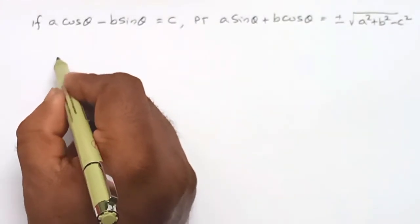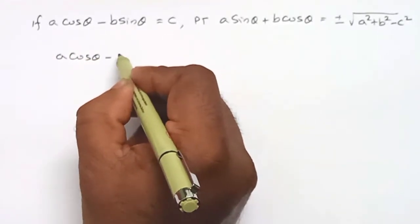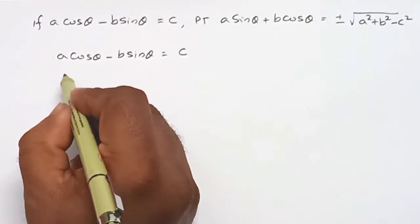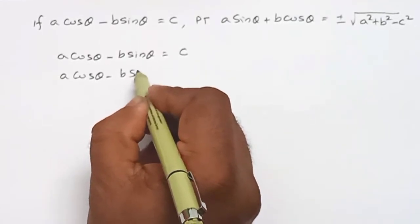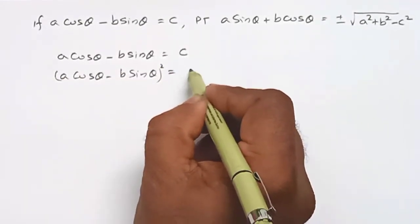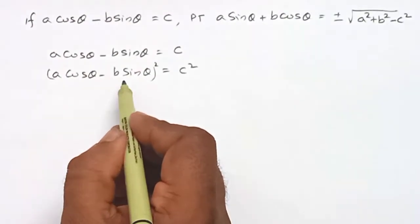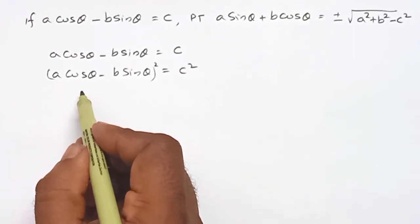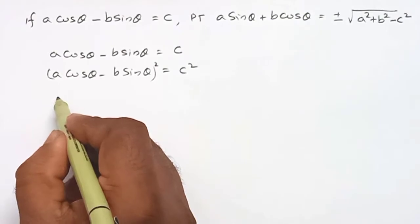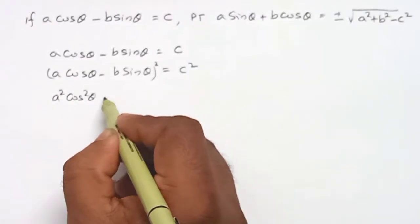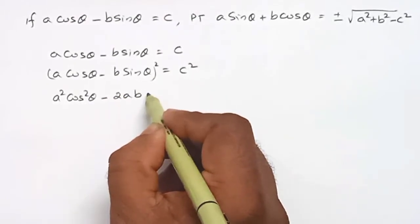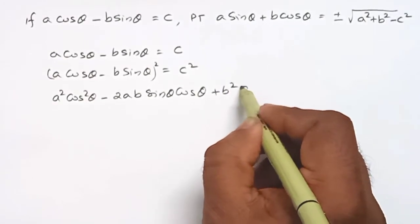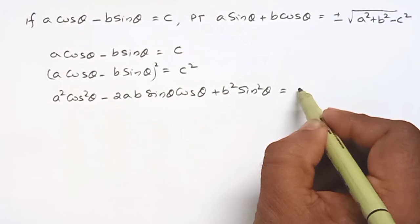We have A cos theta minus B sin theta is equal to C. Squaring on both sides, that is, A cos theta minus B sin theta, the whole square is equal to C square. Expanding using the identity (A minus B) whole square equals A squared minus 2AB plus B squared, we get A squared cos squared theta minus 2AB sin theta cos theta plus B squared sin squared theta is equal to C squared.